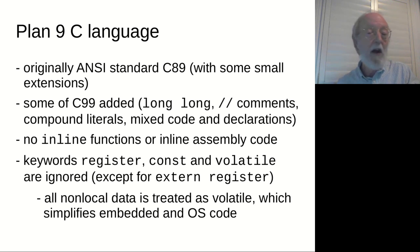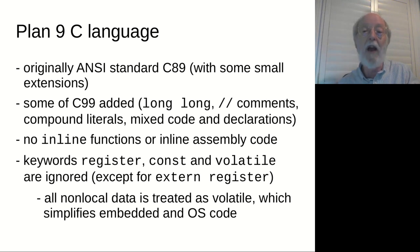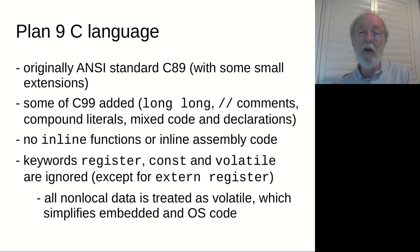What language does the Plan 9 compiler compile? Because of the date it was produced, it's roughly ANSI standard around 1989–1990. It's been modernized with some features like long long for 64-bit integers, so it's a recognizable standard C. It's missing some things like const and volatile. There's no need for volatile, because all non-local data is treated as if it were volatile. That simplifies writing embedded code and operating system code, which is the sort of target that C is really best at.